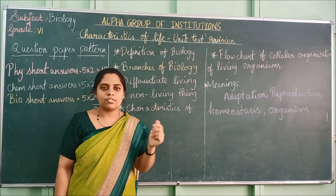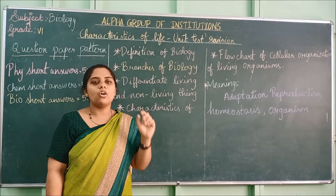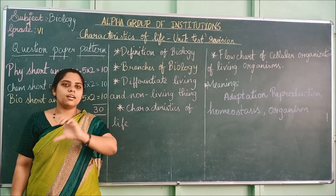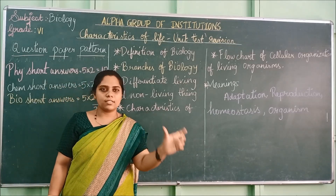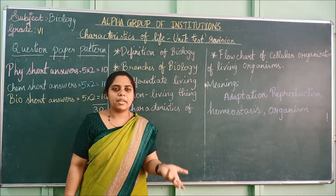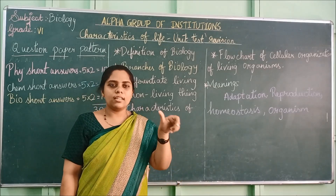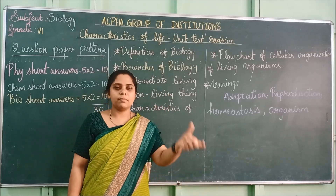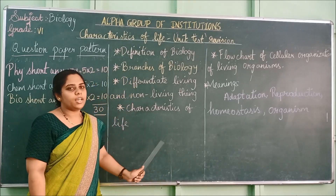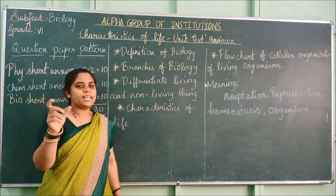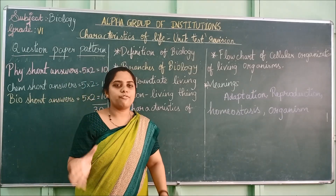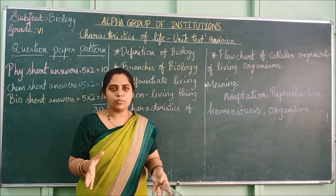Next, the characteristics of life — you will be having 5 or 6 characteristics of life. Learn all those characteristics. A single characteristic may be asked for two marks — for example, explain about growth and change, or explain about reproduction. Any one characteristic may be asked. Or if the question is about writing characteristics of life, you have to write all the headings, or any one characteristic may be asked to explain briefly. So be ready for both types of questions.